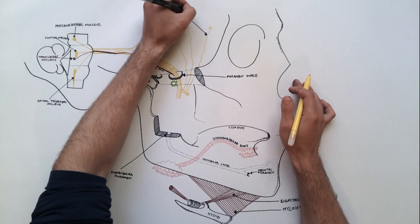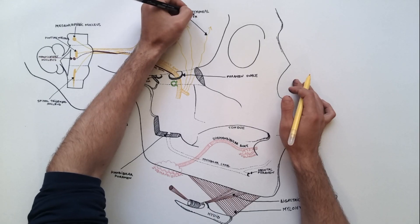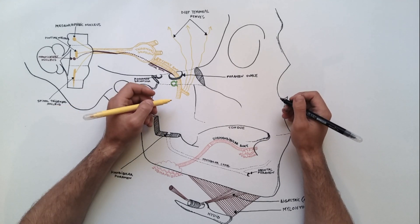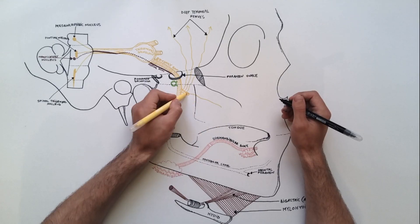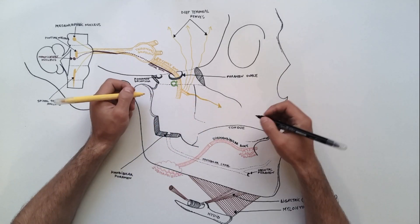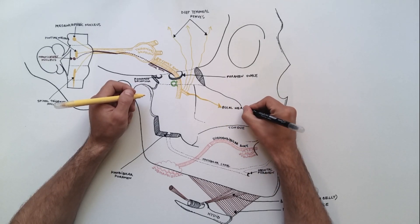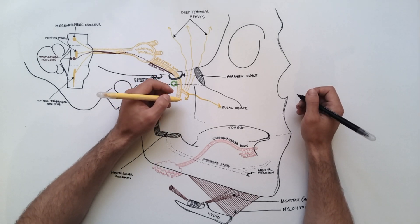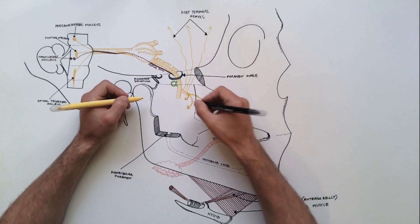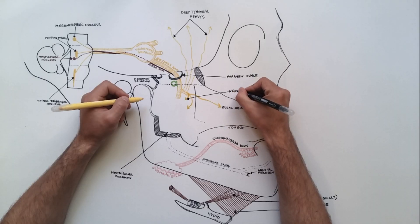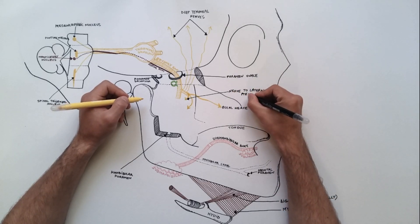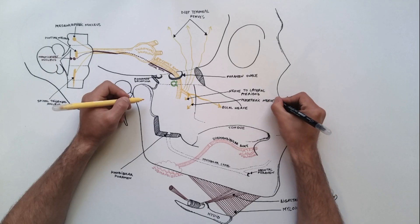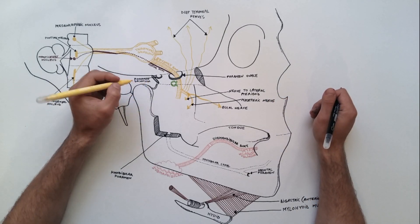We will start with the anterior division of the mandibular nerve. This division gives off the following branches. I have already indicated the deep temporal nerves, which can be two or three in number; those nerves will innervate the temporalis muscle. The buccal nerve contains all the sensory fibers from the anterior division of the mandibular nerve, and this nerve will innervate the skin and the mucous membrane related to the chin. Another branch from the anterior division is the nerve to lateral pterygoid, which will innervate the lateral pterygoid muscle. The last branch from the anterior division is the masseteric nerve, which will innervate the masseter muscle.